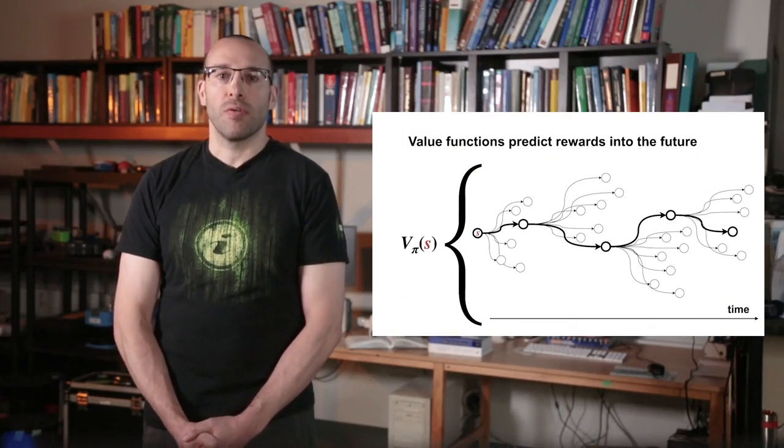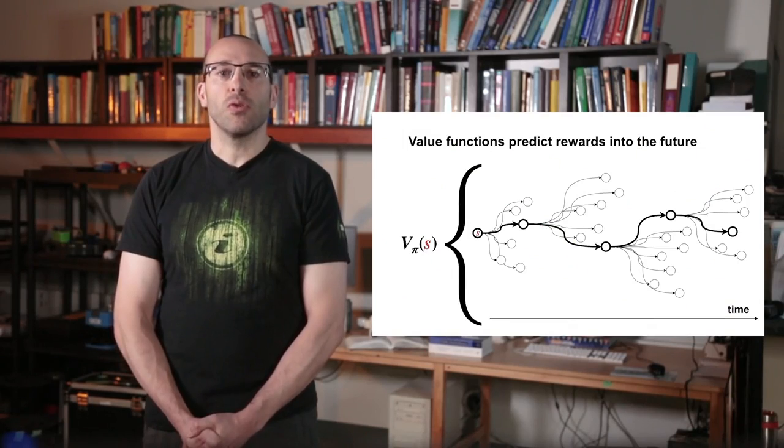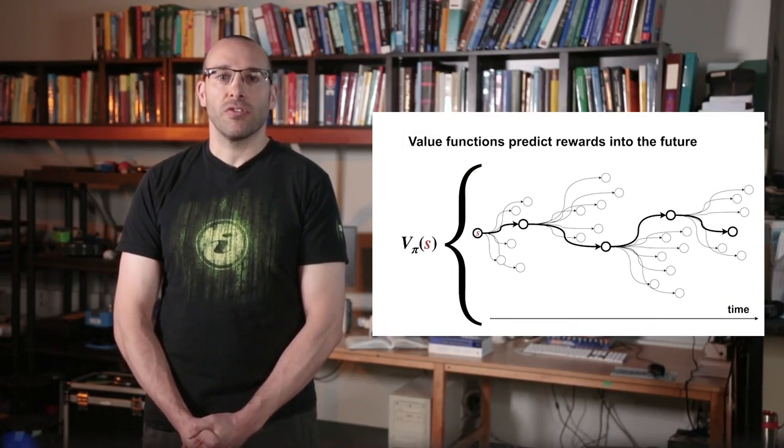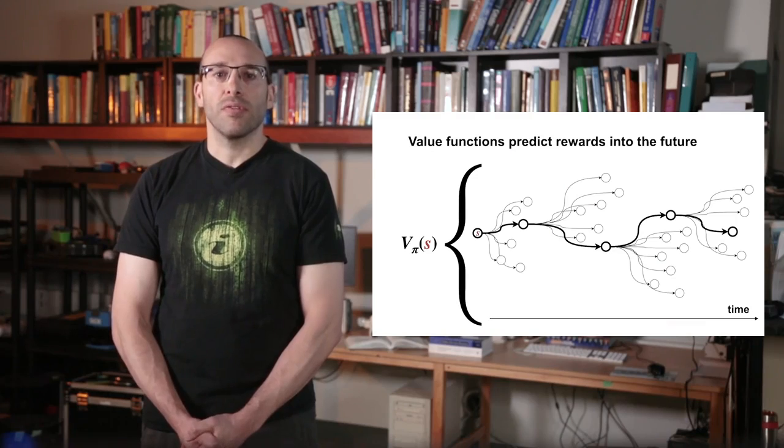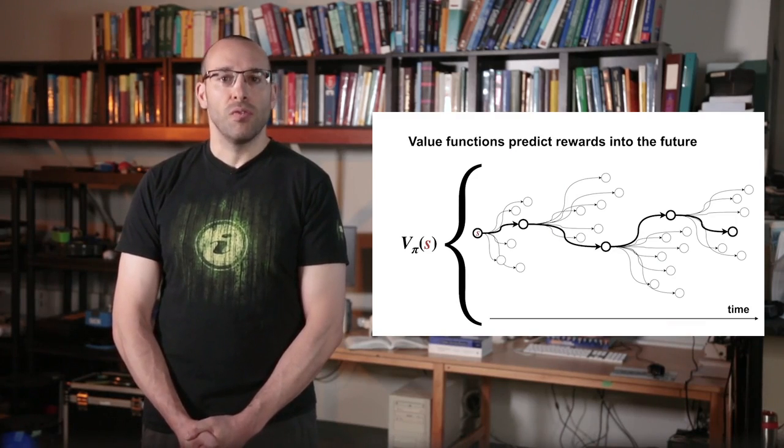Value functions are crucial in reinforcement learning. They allow an agent to query the quality of its current situation instead of waiting to observe the long-term outcome. The benefit is twofold.